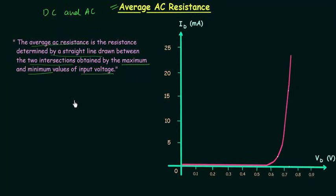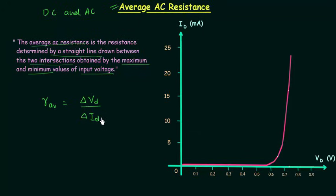The average AC resistance is denoted by R subscript av, where av stands for average, and it is equal to ΔVd divided by ΔId. I will explain how we can calculate ΔVd and ΔId by using this plot.